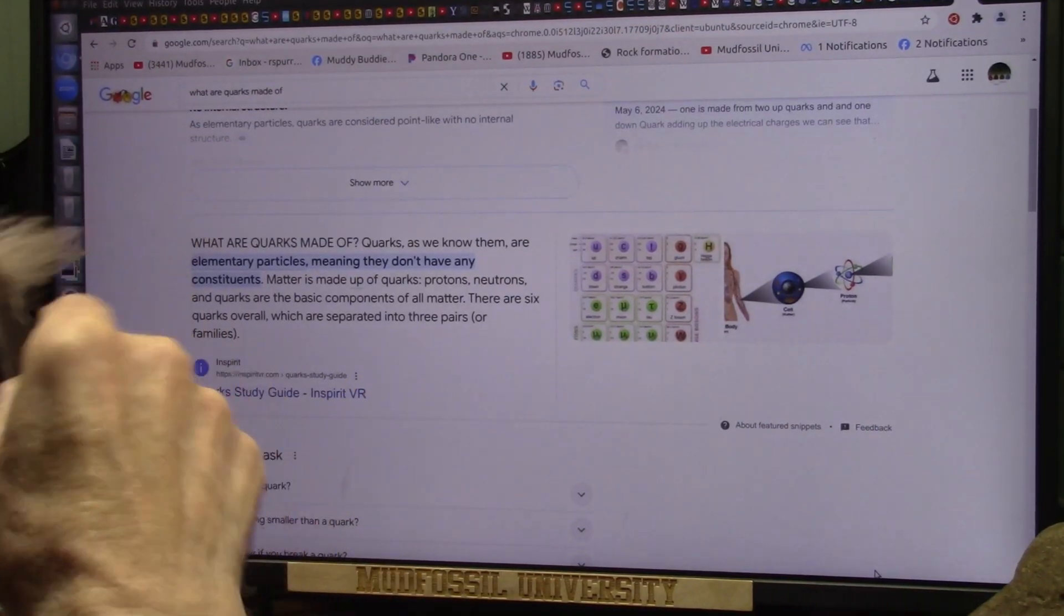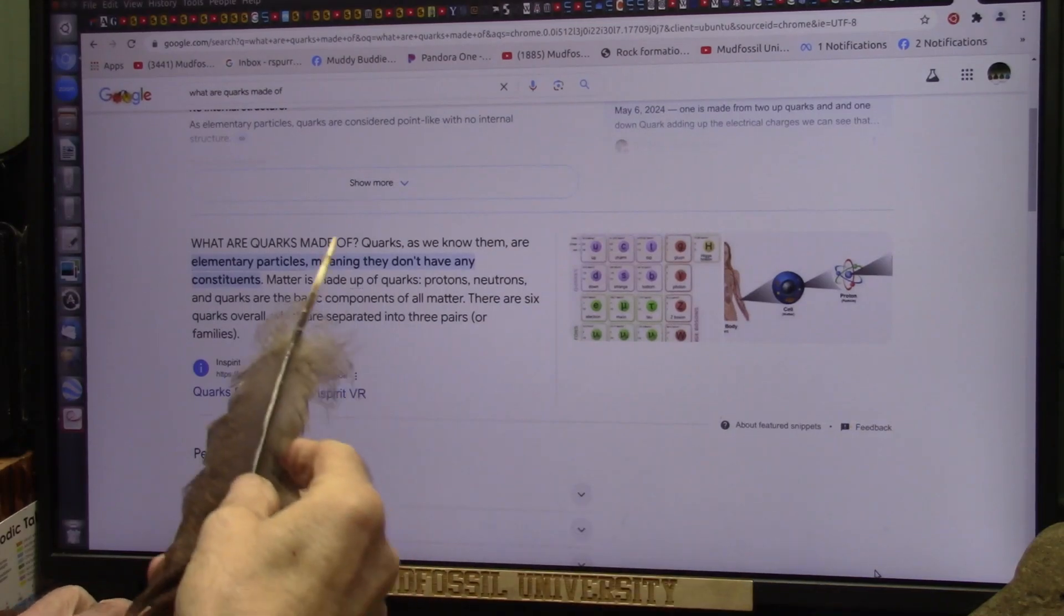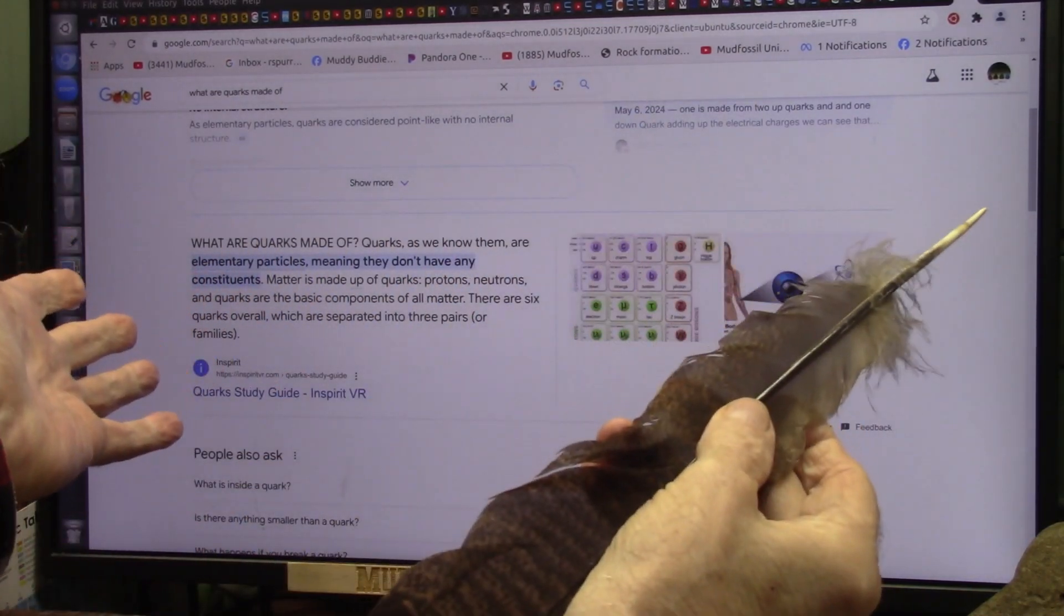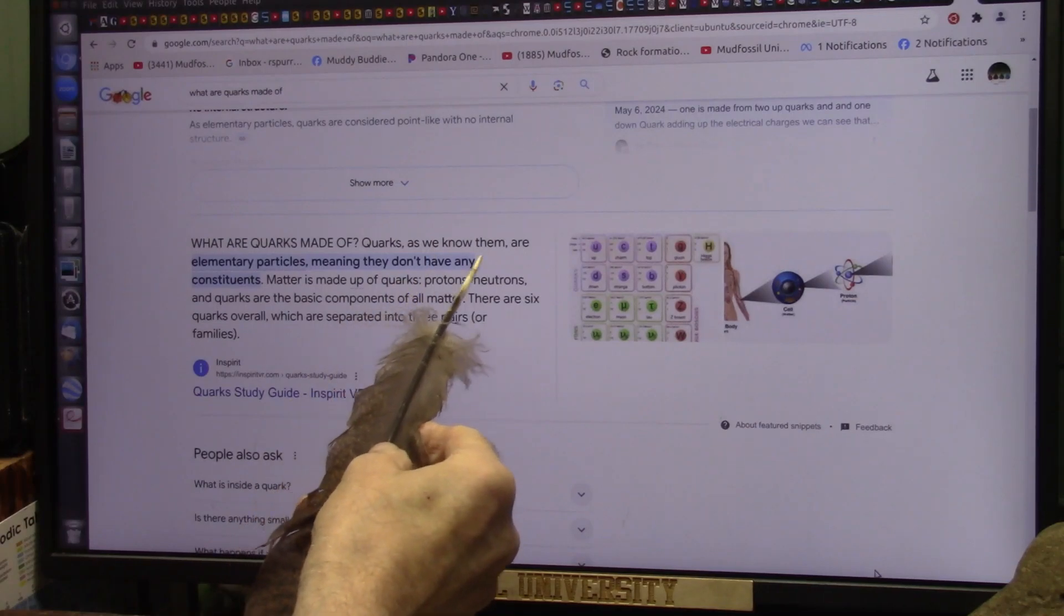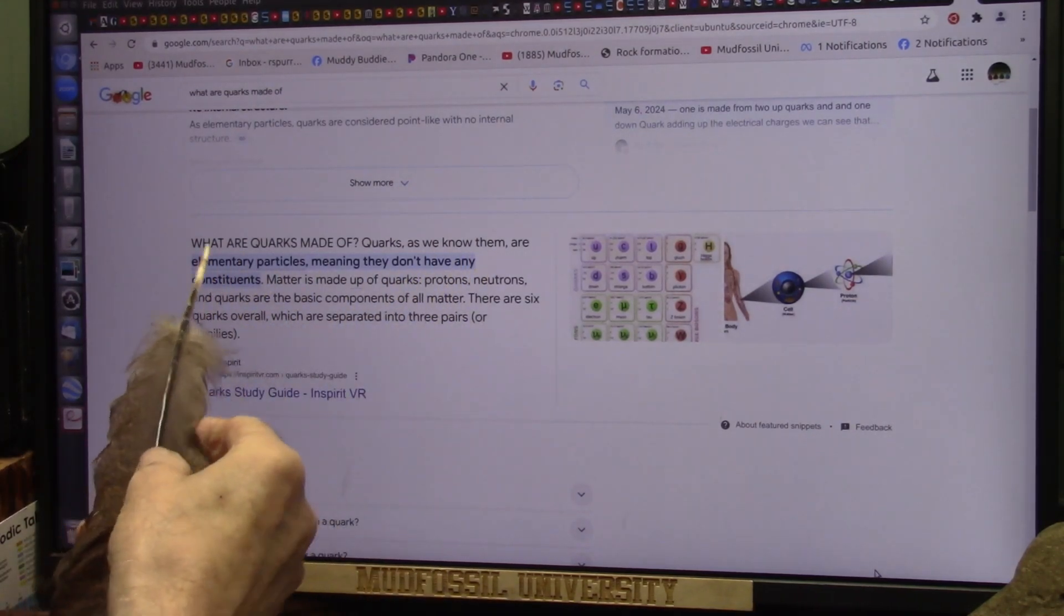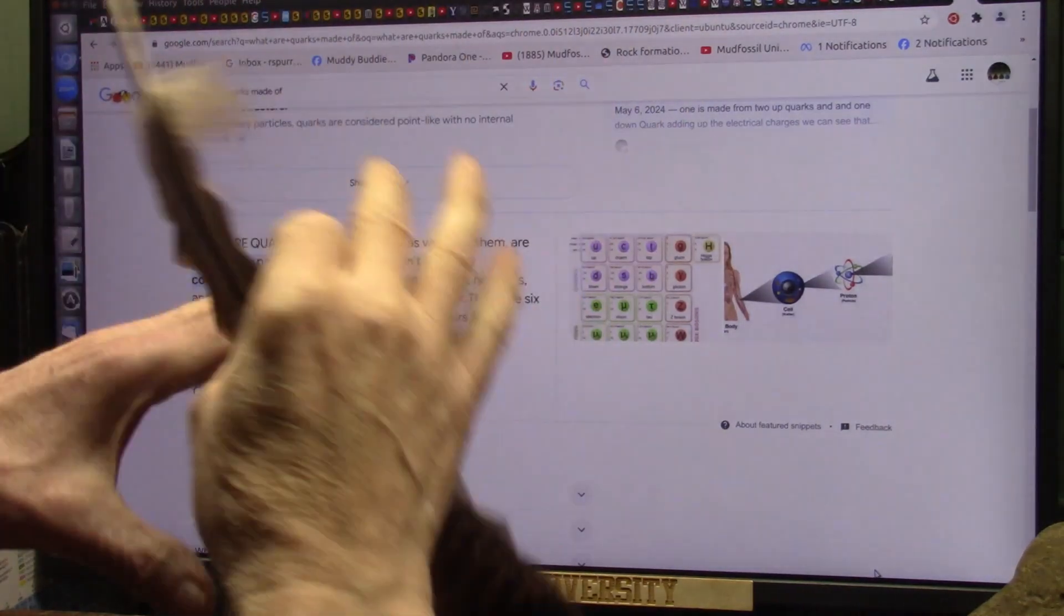Dipole electron flood theory covers this elegantly. They're saying, I asked, what are quarks made of? What's a quark? What is a quark made out of? Quarks, as we know them, are elementary particles meaning they don't have any constituents. They're just all by themselves.